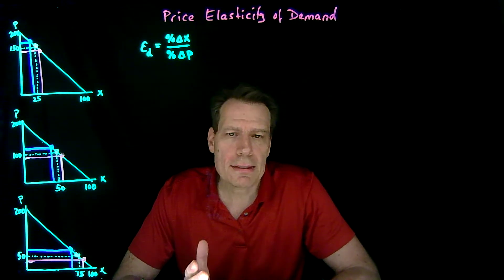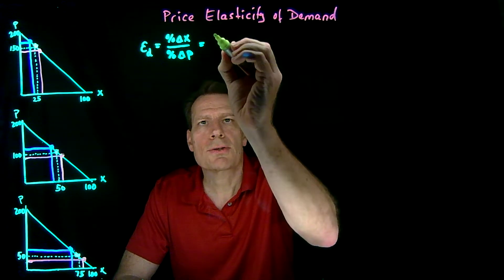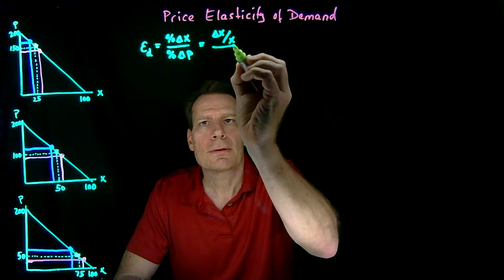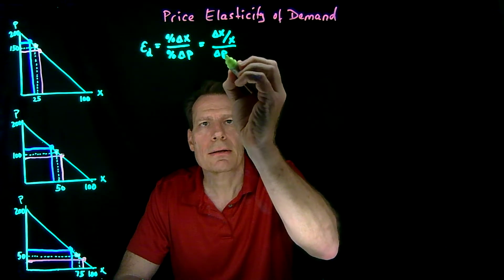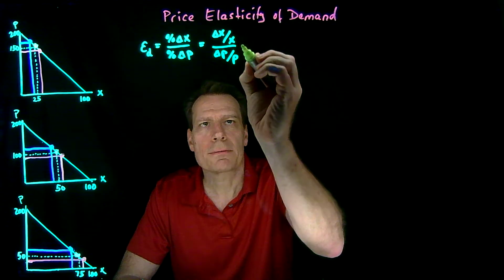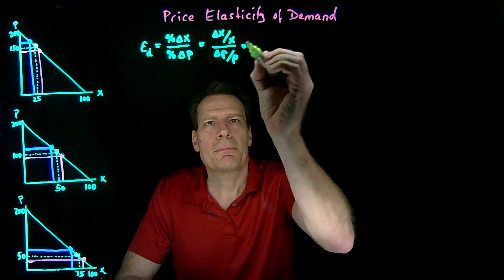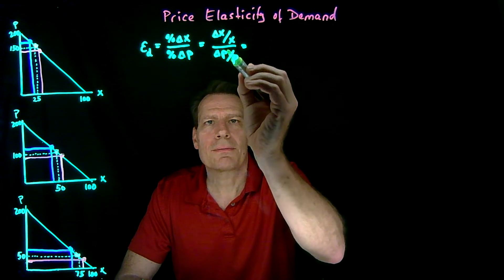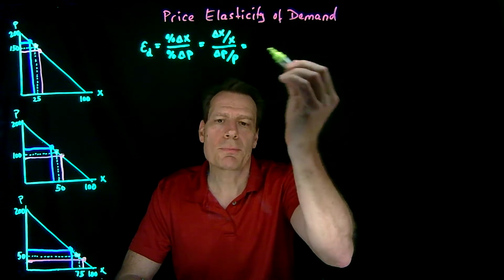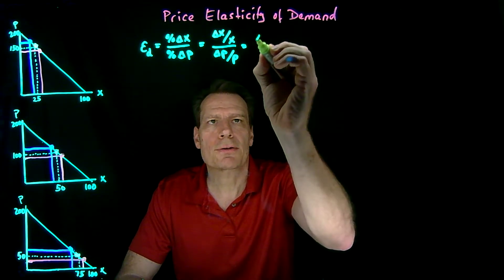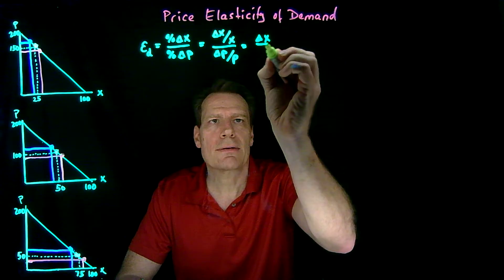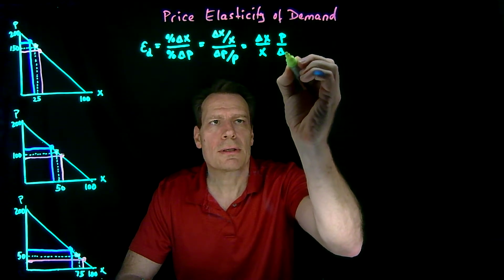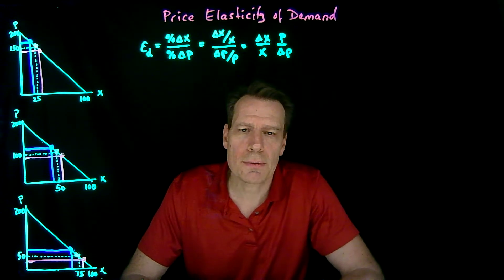We can expand that a little bit by recognizing that a percentage change is a change in a quantity divided by a quantity. That's true for price as well — a change in the price divided by a price. By using the fact that dividing by a fraction is the same as multiplying by its inverse, this can be written as the change in x divided by x, times p over the change in p.